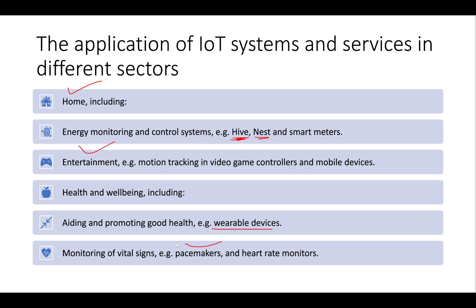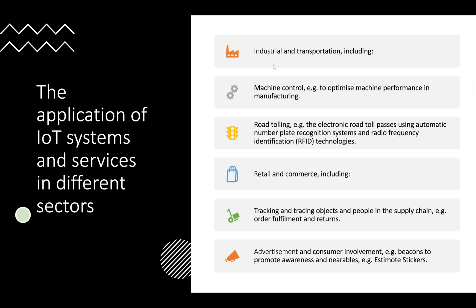An example of health monitoring is pacemakers - a pacemaker is wired directly to your heart, and because it's a smart device, it can alert your phone or your doctor's phone if something is going wrong before a catastrophic event occurs. The industrial and transportation sector includes machine control to optimize manufacturing performance, and road tolling using automatic number plate recognition and RFID technology - you drive up and the system identifies your plate or detects a card in your car automatically.